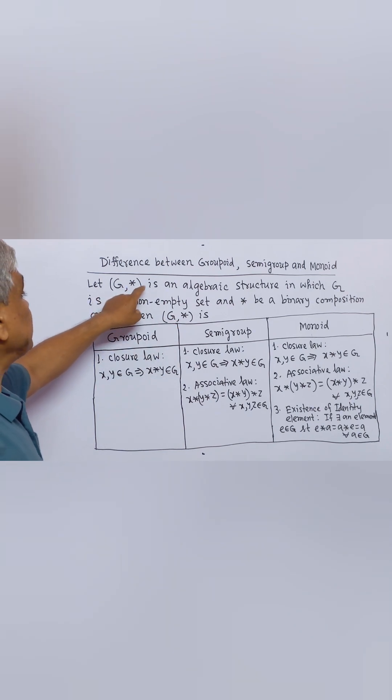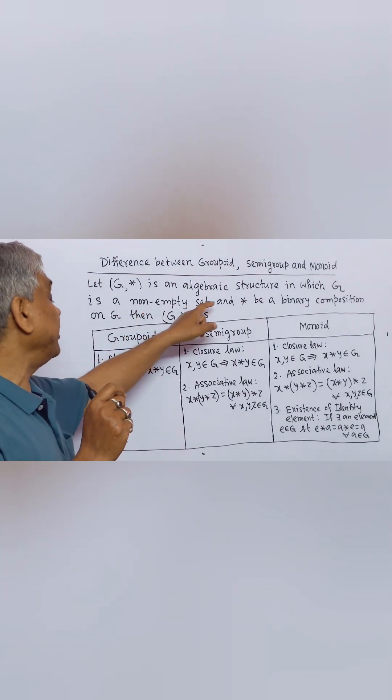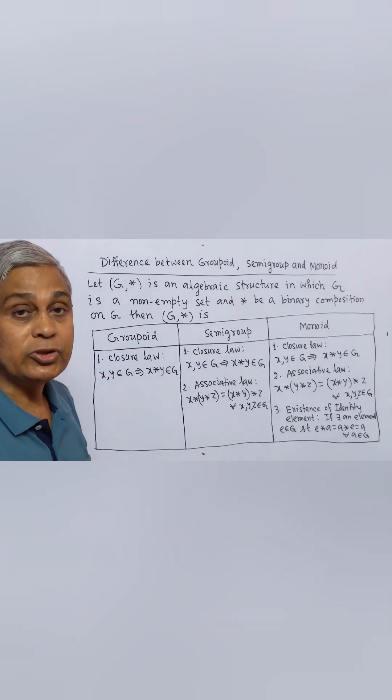Let G with binary composition be an algebraic structure in which G is a non-empty set and star be a binary composition on G.